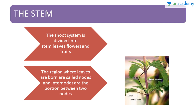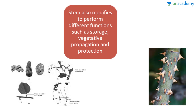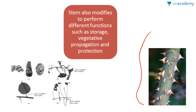Now we learn about the stem. Stem is a part of the shoot system, and the shoot system is divided into stem, leaves, flowers, and fruit. The region where leaves are born are called nodes, and internodes are the portion between two nodes. These are the nodes and this is the internode. Stem also gets modified to perform different functions such as storage, vegetative propagation, and protection — like these thorns.